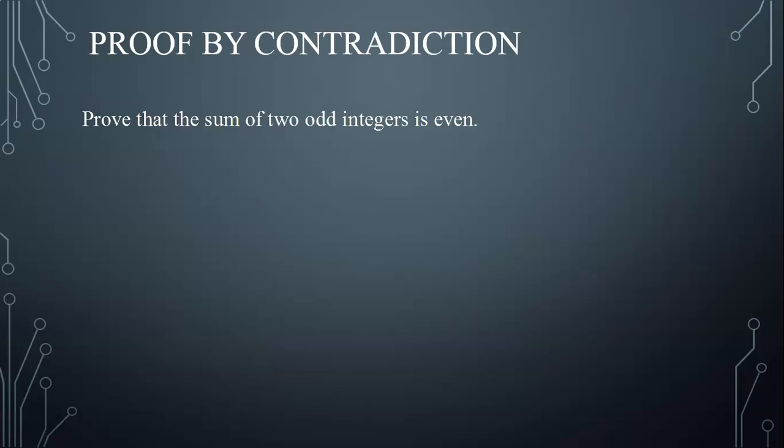So, I start by pointing out my given, and here I'm given two odd integers. And then, I point out what is required to prove, which is that their sum is even.